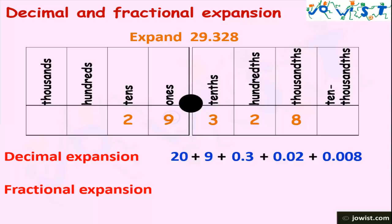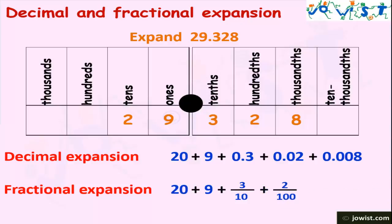Now let's understand the fraction expansion of this number. The number has two tens, so we will write 20. Plus we have nine ones, so we will write 9 — these are the whole number part. Plus we have three tenths, so we will write 3 upon 10. Plus we have two hundredths, so we will write 2 upon 100. Plus we have eight thousandths, so we will write 8 upon 1000.